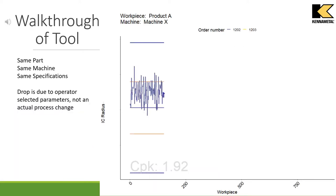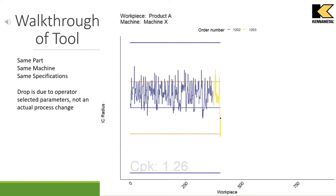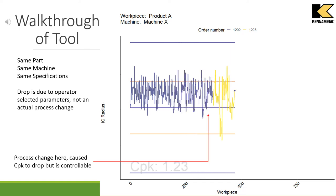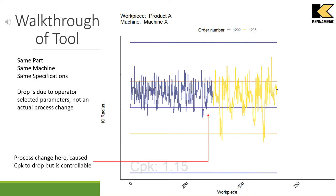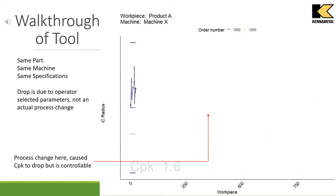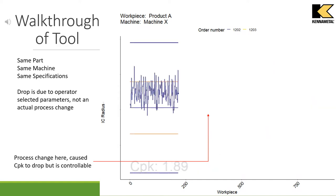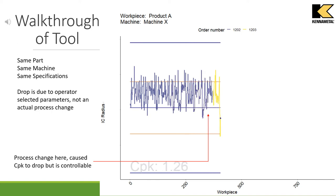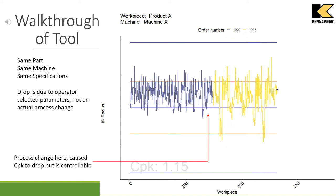To exemplify the value of this tool, we will walk through some of the results found. This visual shows IC radius measurements for production runs of the same part, machine, and specifications but have very different capability values. It is evident that the only difference in the process is where the machine resets to after hitting the upper control limit. This shows that the drop happened in a controlled manner and could easily be corrected by returning to the operator-selected settings from order 1202.